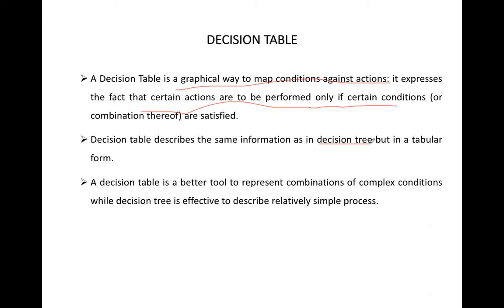Because of its tabular form, you cannot easily show flowcharts or decision trees in a small space — you cannot draw them compactly. But because of the tabular form of the decision table, you can present a high amount of data and a high amount of conditions in a very compact view.